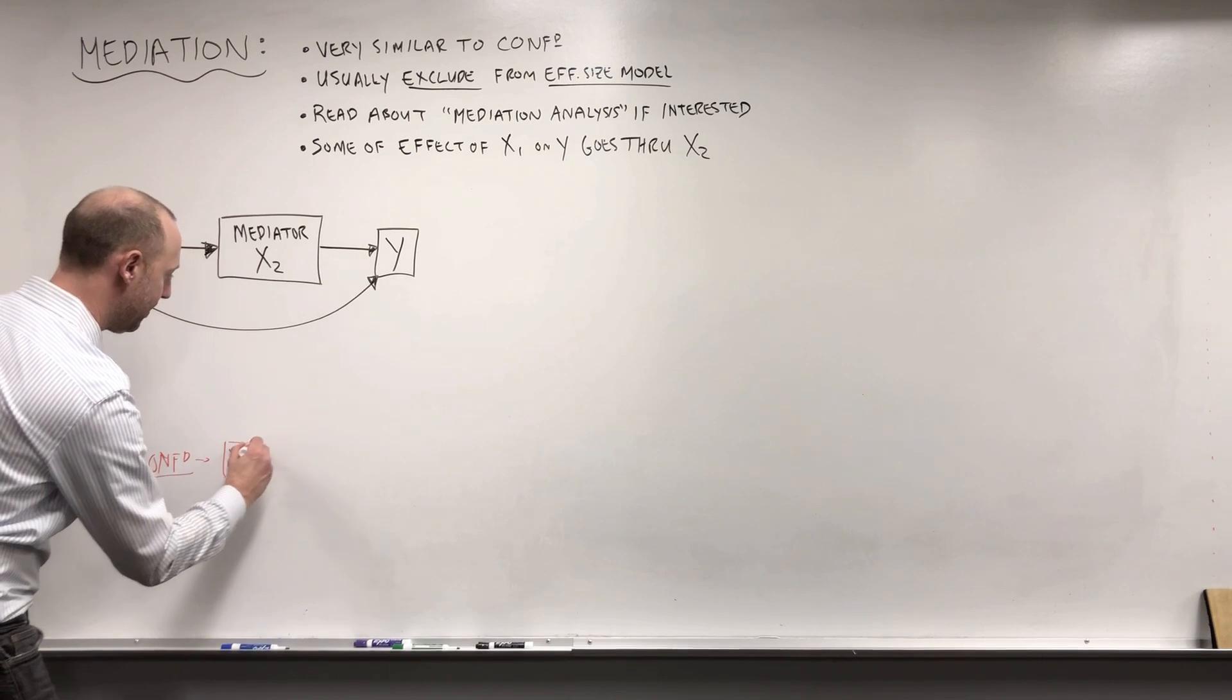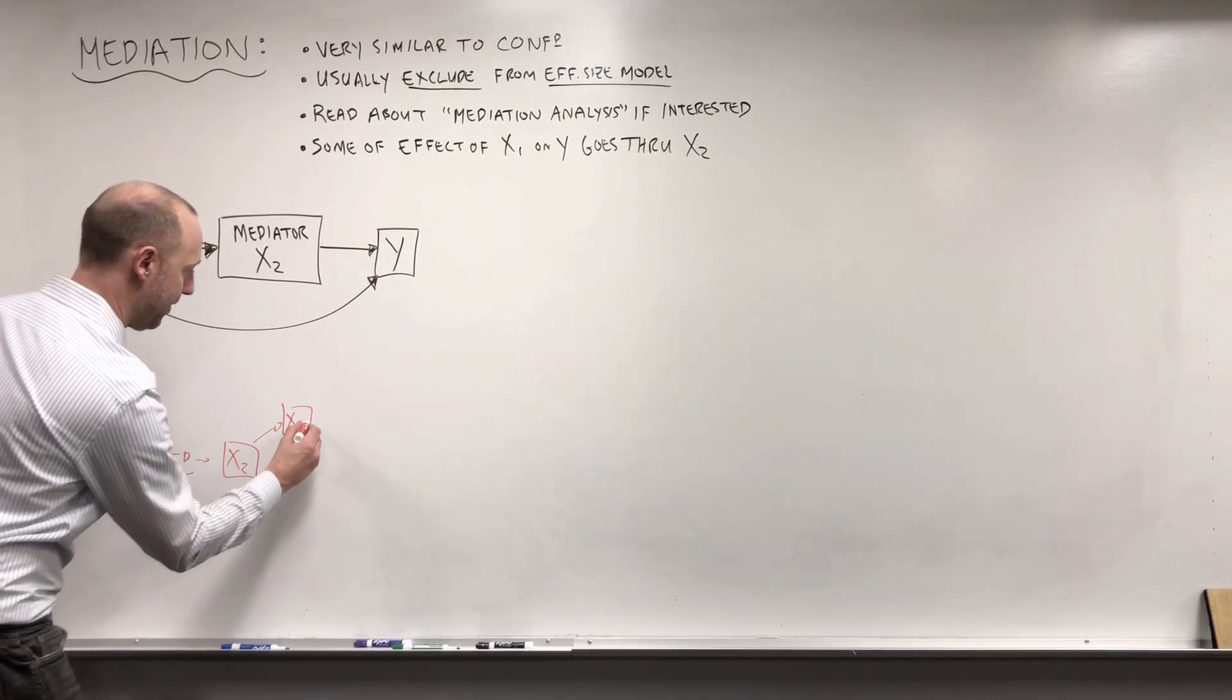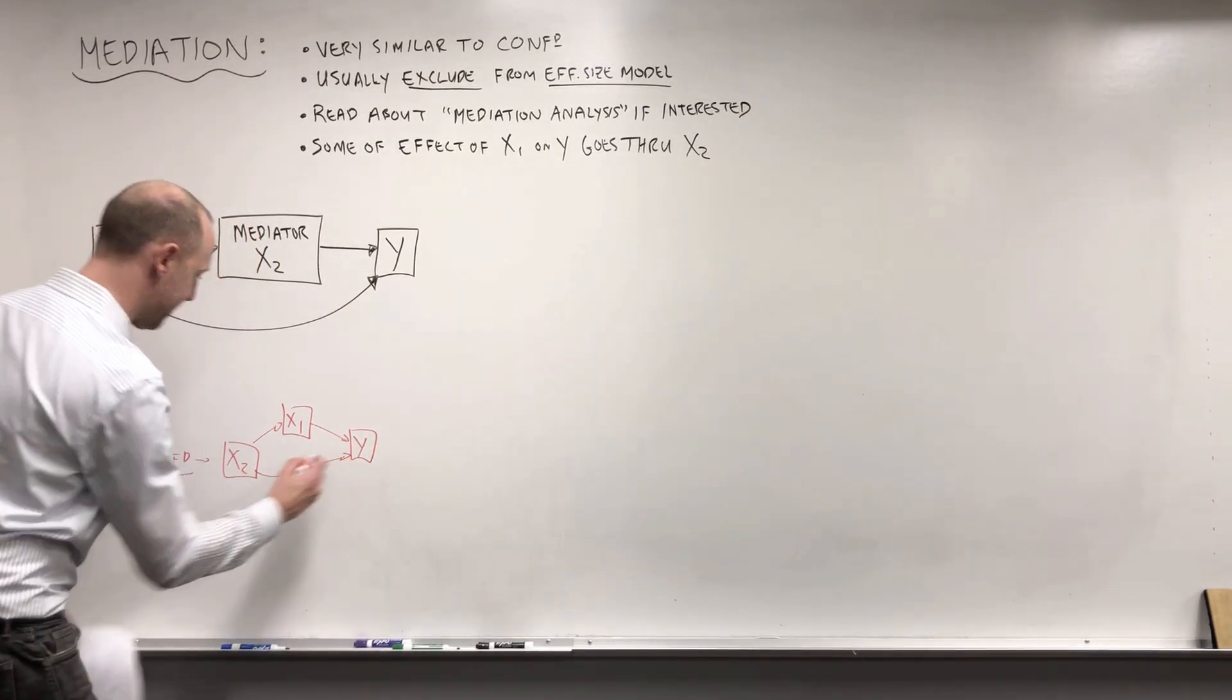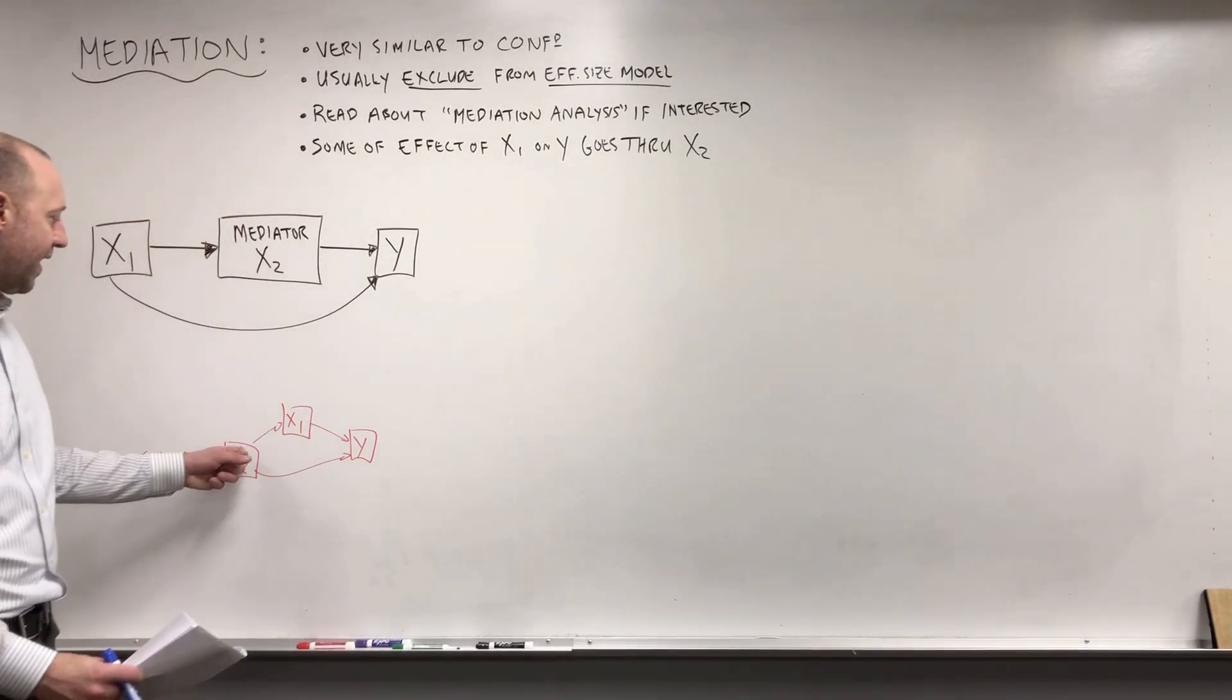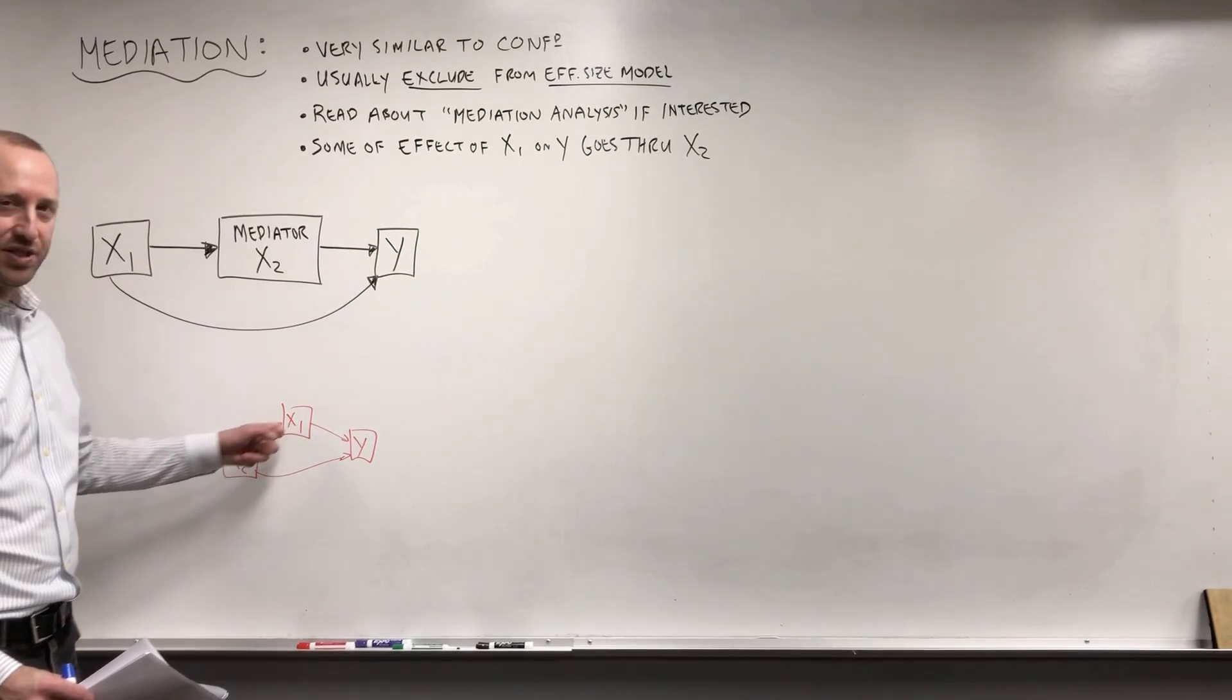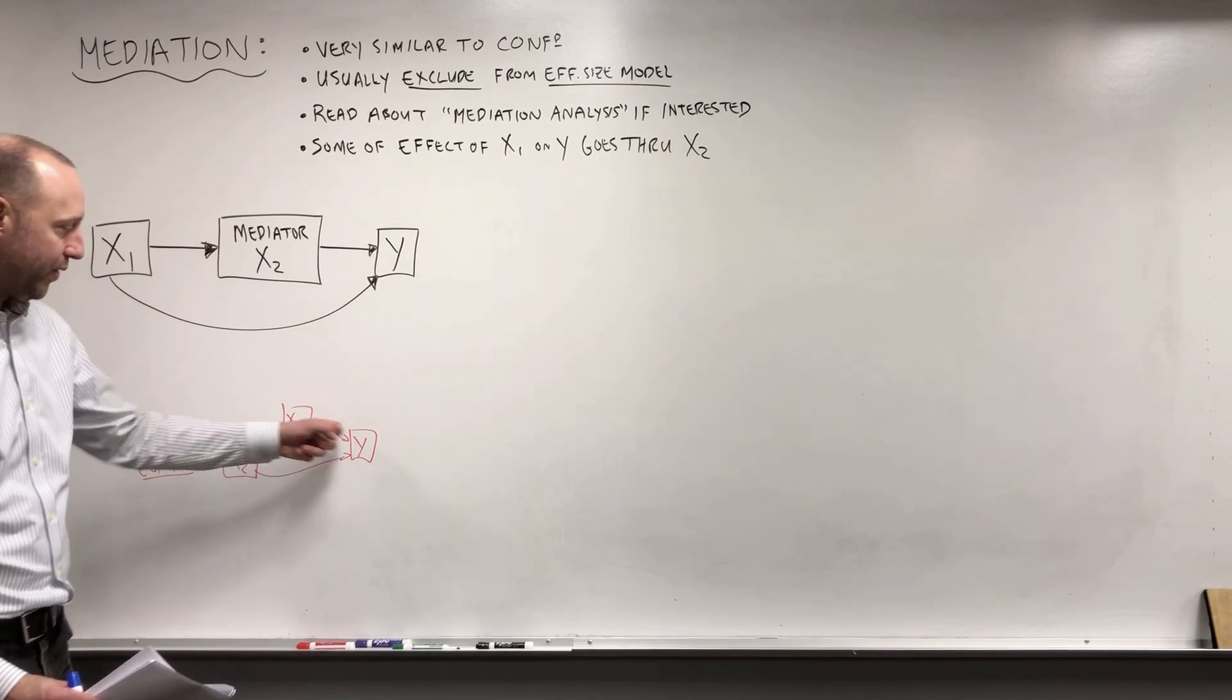x2 has some influence on x1. What effect does x1 have on the outcome? That's our question of interest. And x2 also directly affects the outcome. So x2 and x1 were associated, but it was either x2 causing changes in x1, or at least x2 not sitting on the pathway between x1 and the outcome.